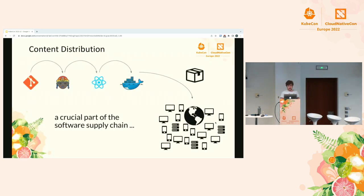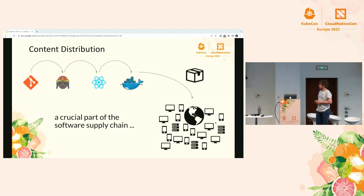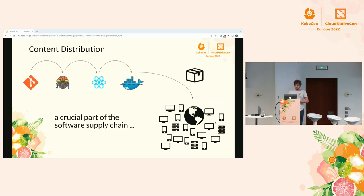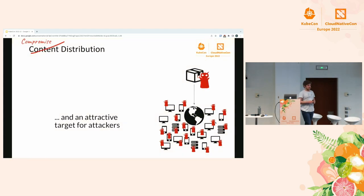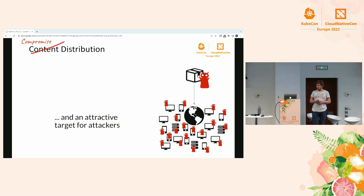Software updates and software distribution are a very crucial part of the software supply chain. At the edge of it, it is where things get multiplied. Whatever comes out of your software supply chain eventually lands on many, many devices — computers, container clusters, phones, IoT devices, your light bulb, whatever. That's why it's very attractive for attackers to attack somewhere in the supply chain or at the content distribution infrastructure, because a single compromise can have huge impacts — thousands, millions of devices.